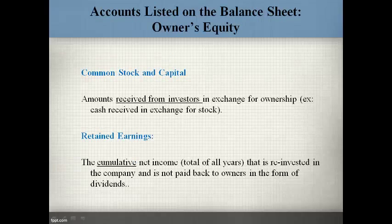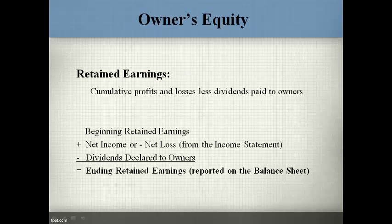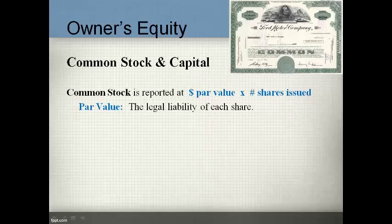The two most common owner's equity accounts are common stock and capital, and retained earnings. Common stock and capital represents amounts received from owners. Retained earnings is the total profits and losses from the first day of business that is kept in the company and not returned to owners. Retained earnings changes with net income or net losses and dividends to owners. The cumulative balance at the end of the period is reported on the balance sheet. Common stock and capital is reported on two separate line items.